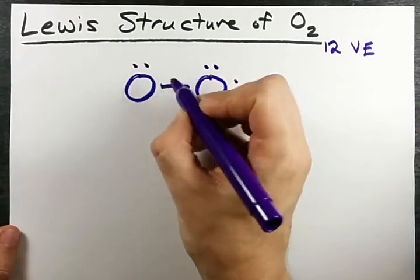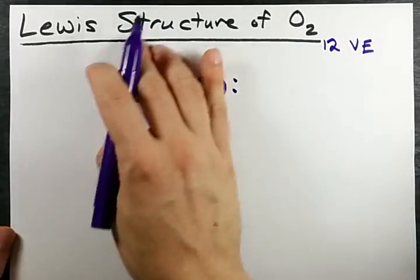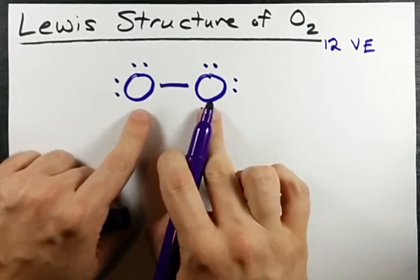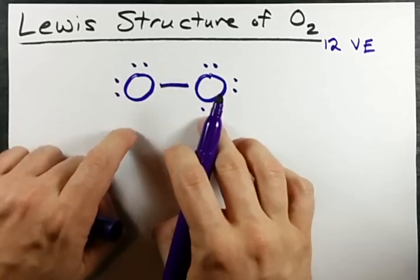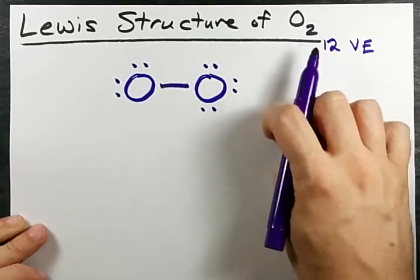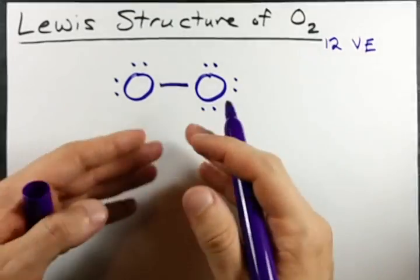So, 9, 10, 11, 12. Here, I have two oxygens connected with 12 electrons total. That satisfies the fact that I need 12 valence electrons total.